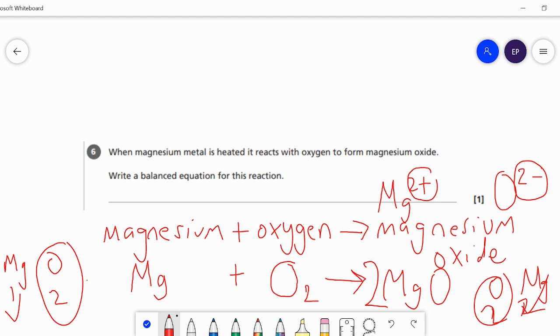So to finish balancing our equation we need to place a balancing number of 2 in front of the Mg on the left hand side. Our final check: 2 magnesiums on the left, 2 magnesiums on the right, 2 oxygens on the left and 2 oxygens on the right. So we've got a fully balanced symbol equation for this reaction.